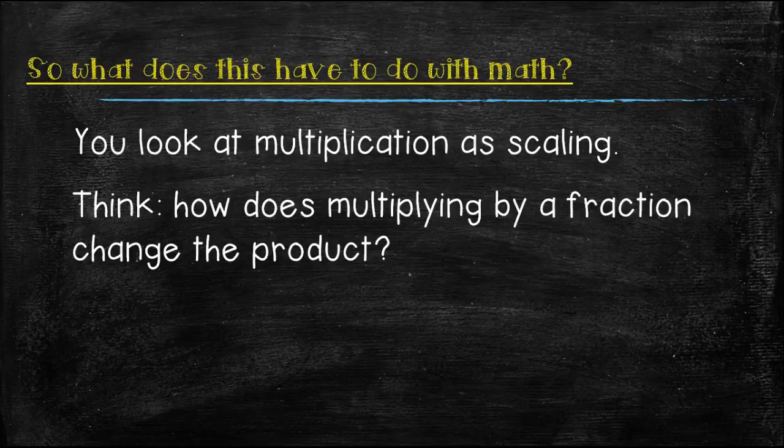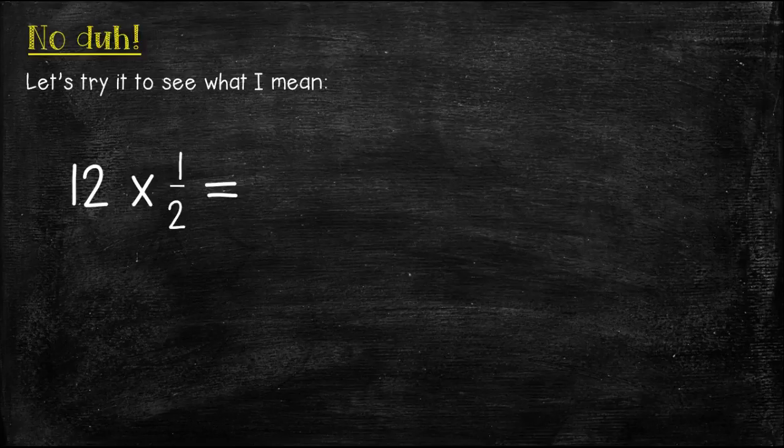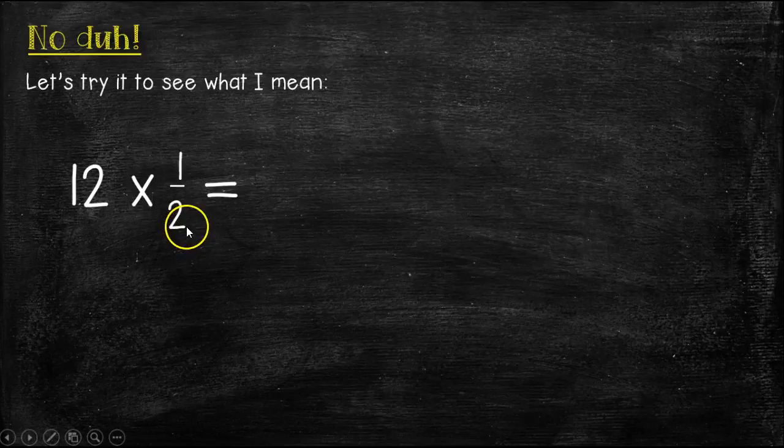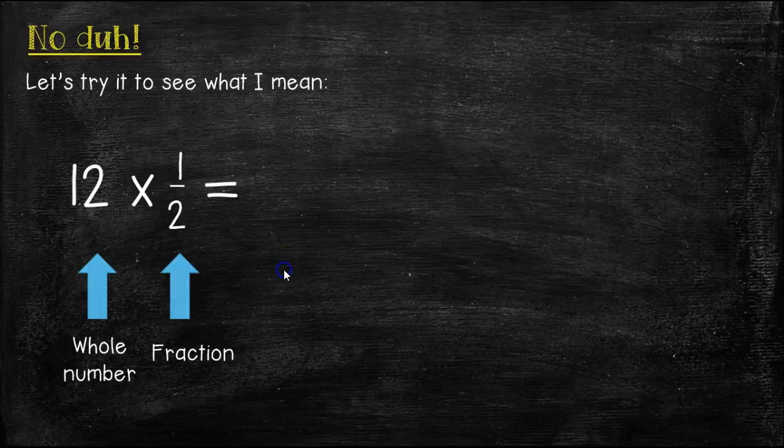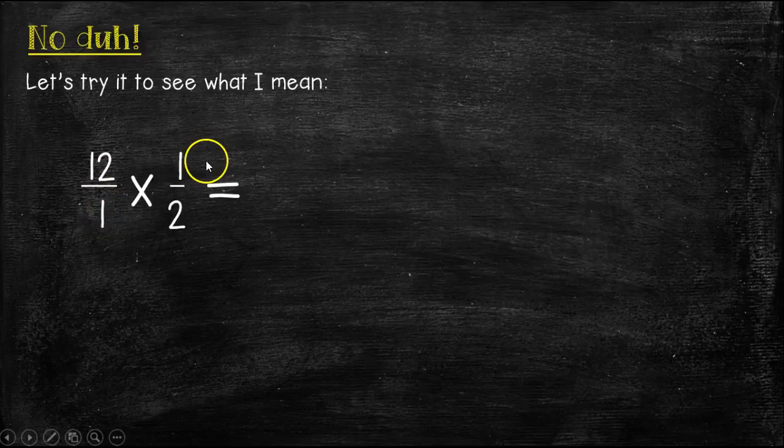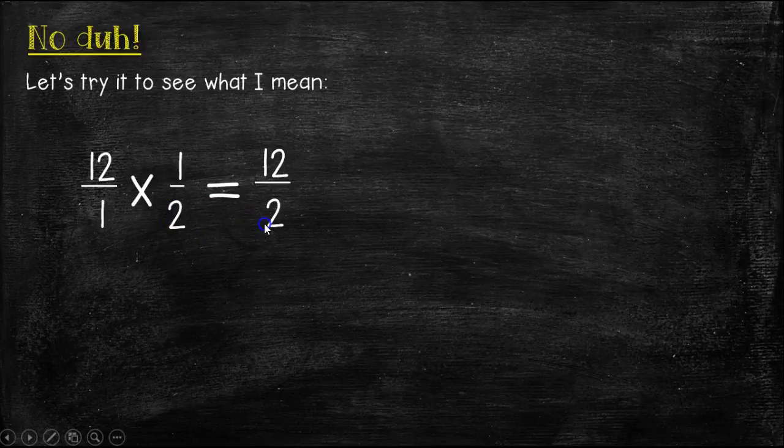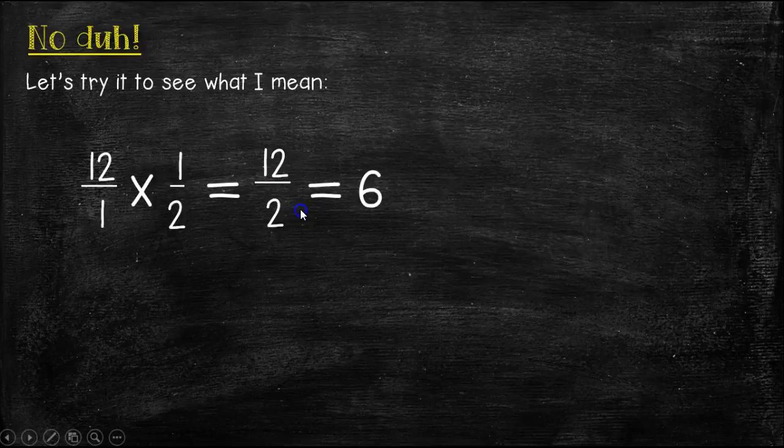So, what does this have to do with math? Well, you have to look at multiplication as scaling. Think in your head. How does multiplying by a fraction change the product? Well, here's a no duh, but I'm going to show you what I mean by scaling. Here we have 12 times 1/2. 12 is a whole number and 1/2 is a fraction. 1/2 is smaller than 1 whole, right? So, when you multiply a whole number by a fraction, you need to put a 1 underneath the whole number so that you can multiply across. 12 times 1 is 12. 1 times 2 is 2. Well, then, in order to figure out, because this is an improper fraction, in order to figure out and simplify that, we need to do 12 divided by 2, and that equals 6.